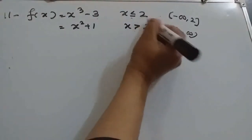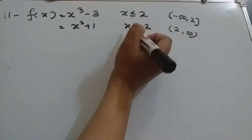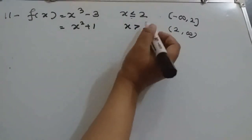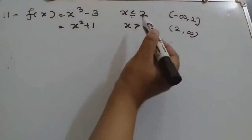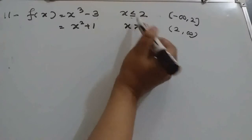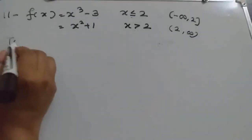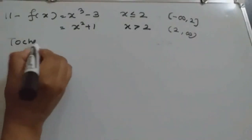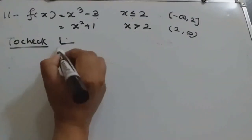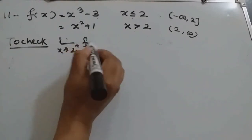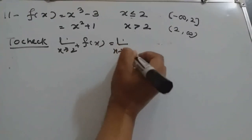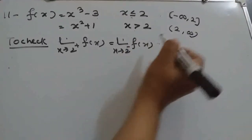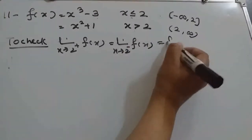Now, the function is separated at 2 — less than 2 and greater than or equal to 2. So at x = 2, we will check continuity. Since there is a less than and greater than sign, we will check the left-hand limit and right-hand limit. So limit x tends to 2 plus f(x) equals limit x tends to 2 minus f(x) equals f(2).